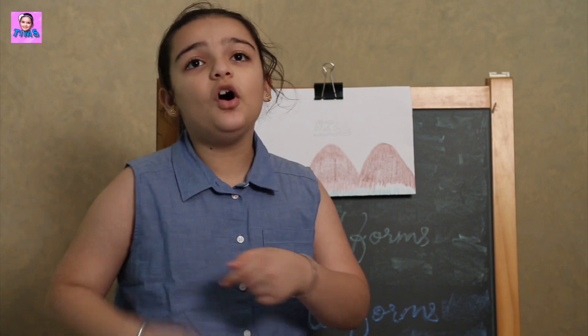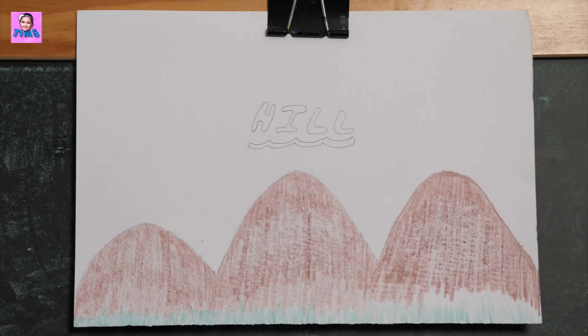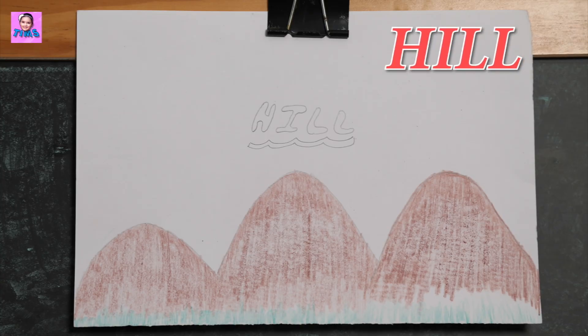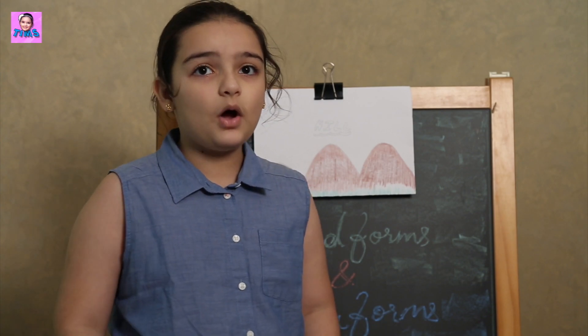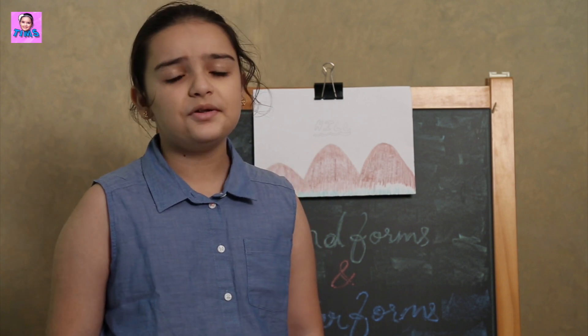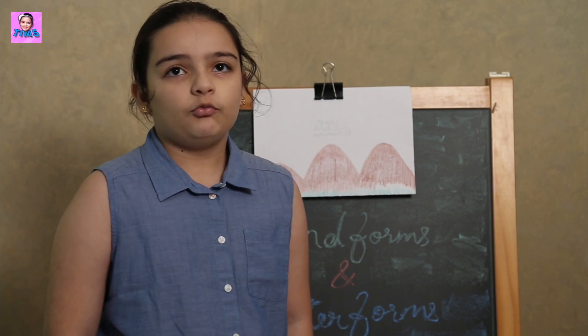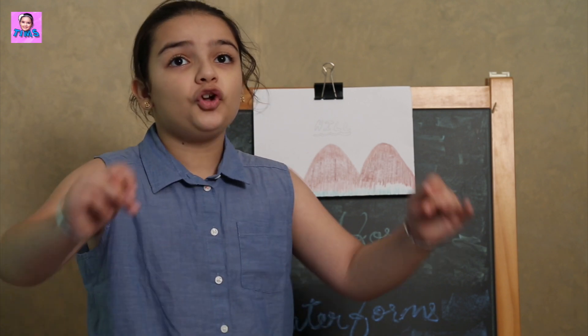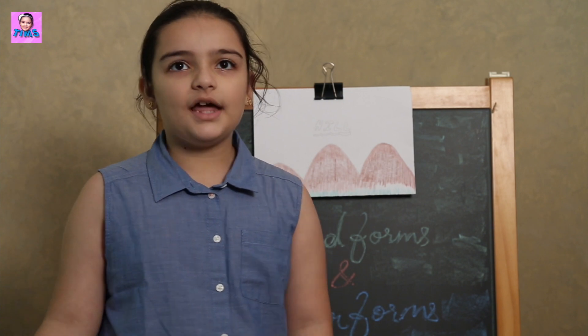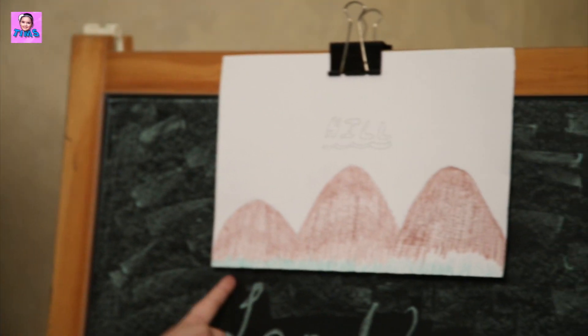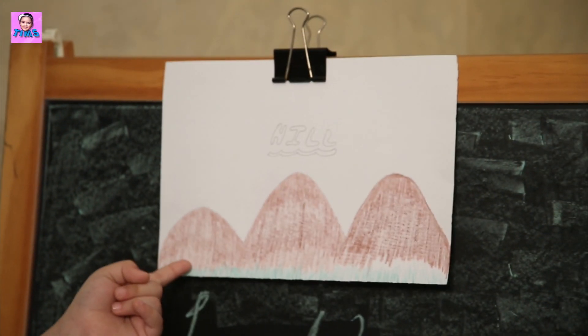Now moving on. Hills. Hills are the raised area or a mound of land which are shorter than mountains. As you can see, they are shorter than mountains.